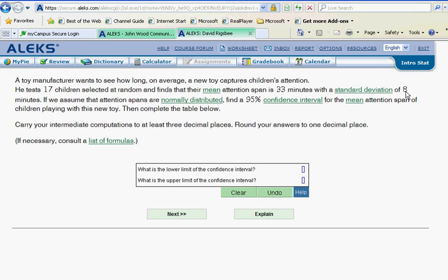Now that is enough to tell us right away that our sample standard deviation is known but this is not the population standard deviation. So as we begin to work with our confidence intervals we're going to have to be using the t distribution. Now if we assume that attention spans are normally distributed, find the 95 percent confidence interval for the mean attention span of children playing with this new toy and then complete the table below.